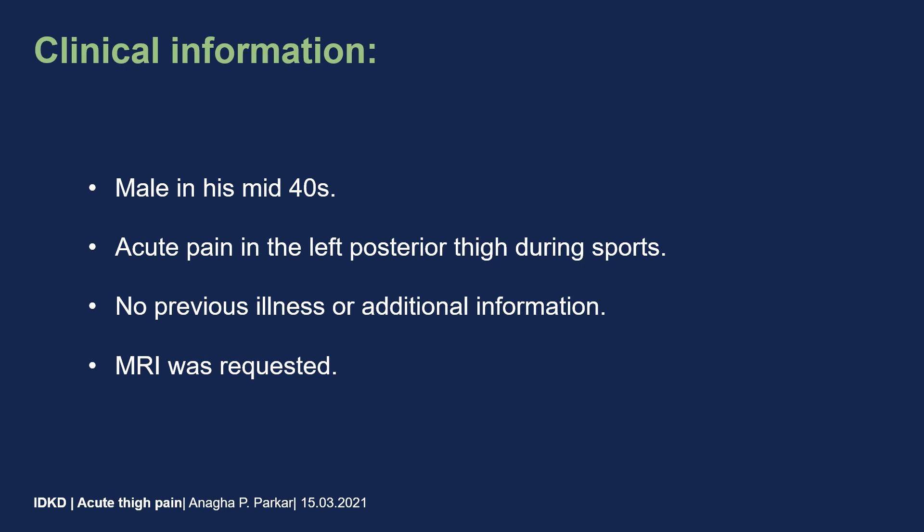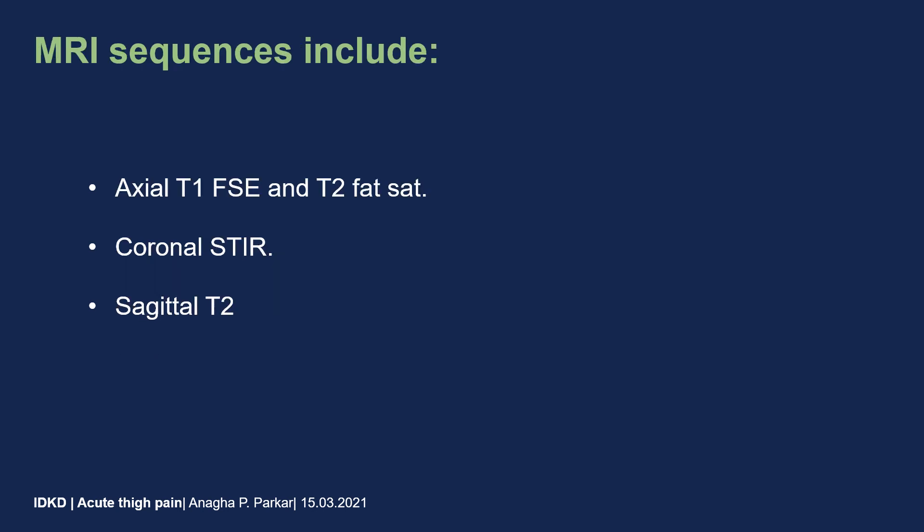An MRI was requested with the question of muscle rupture or tendon pathology. In our hospital, the sequences we do are axial T1 and T2 fat-sat axial, as well as coronal STIR and sagittal T2.